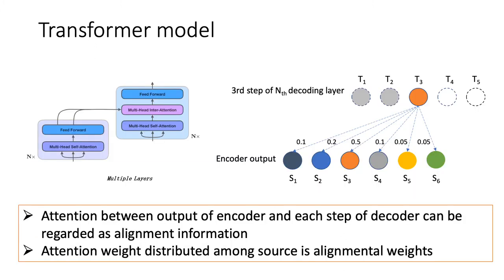Now it is necessary to introduce the transformer model. As the transformer model outperformed other NMT models and became state-of-the-art in machine translation, it uses a combination of self-attention and feed-forward layers in the encoder, and additional source-attention layers on the decoder side. The most important parts are the self-attention inside the encoder and the attention between encoder and decoder. At each decoding step, the decoder distributes an attention weight to the encoder output, which can be regarded as alignment information. These attention weights are key factors in our method.